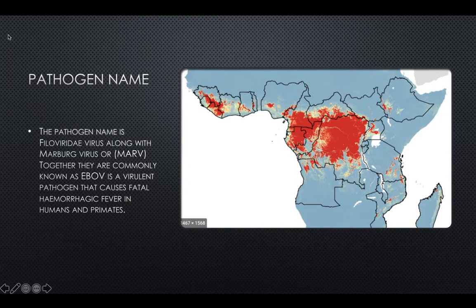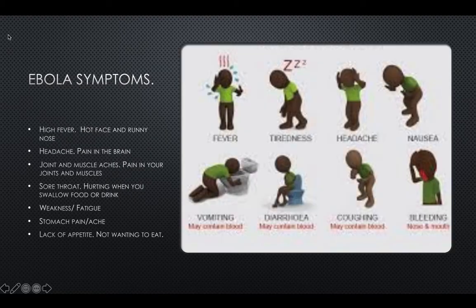The pathogen name is filoviridae virus, along with Marburg virus (MARV). Together, they are commonly known as filoviruses. Ebola virus (EBOV) is a virulent pathogen that causes fatal hemorrhagic fever in humans and primates.